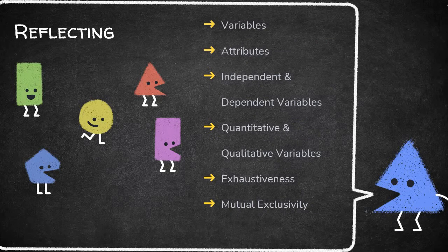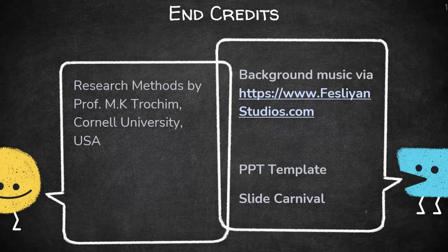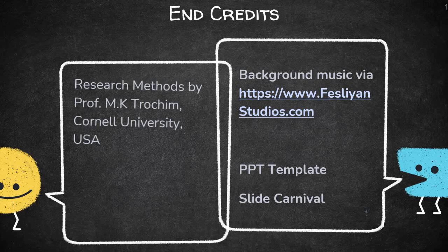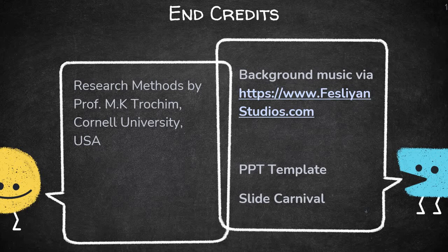So in this video we discussed about variables, attributes, independent and dependent variables, quantitative and qualitative variables, and two very important traits of variables — exhaustiveness and mutual exclusivity. Thank you very much, and if you have not subscribed to our channel, please do subscribe — we would love to hear from you. Anticipating your comments. Thank you very much.